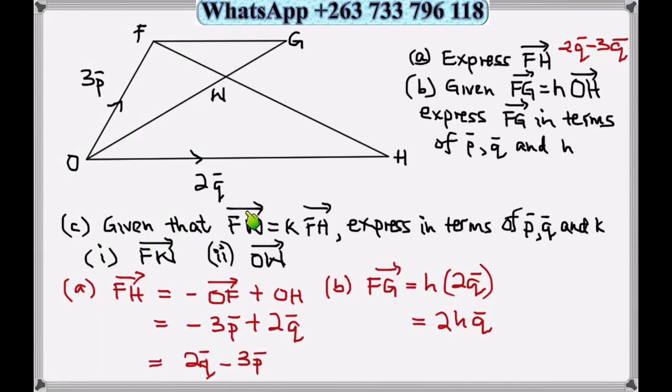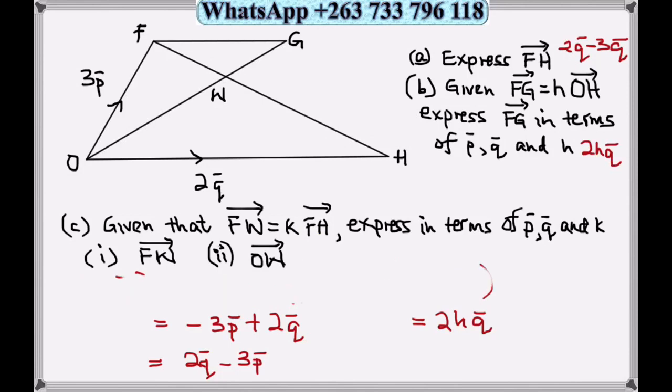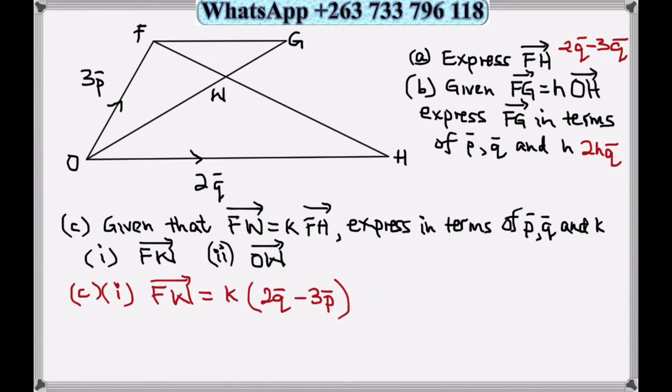Then on part c, given that vector FW is equal to k times vector FH. You can see that we already calculated FH and expressed FH. Then express in terms of p, q, and the constant k. We are given the vector FW. So here is the constant, we just multiply k to this. Vector FW equals k times 2q minus 3p. You can leave it like that.